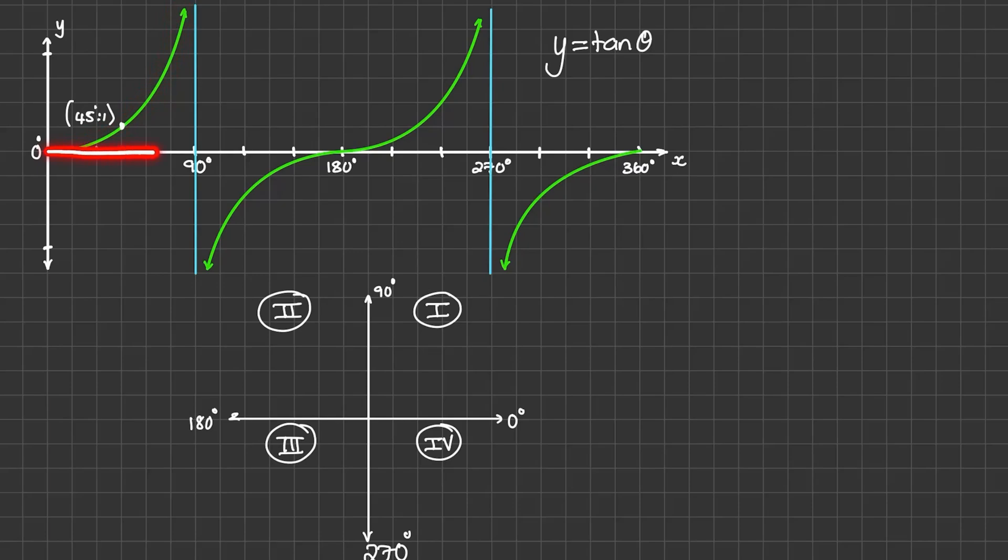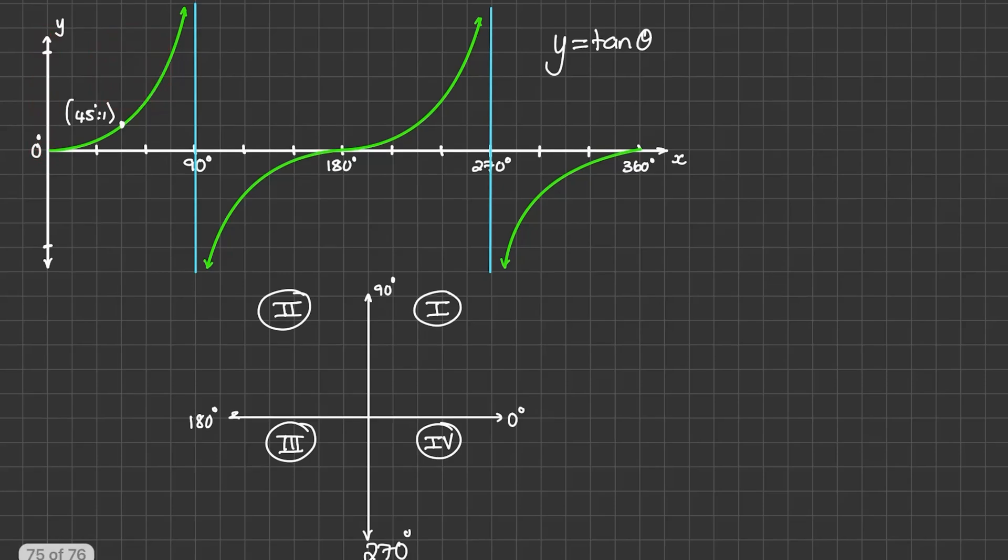Meaning the values are above the x-axis and it produces positive values of y. So tan theta is positive in the first quadrant.